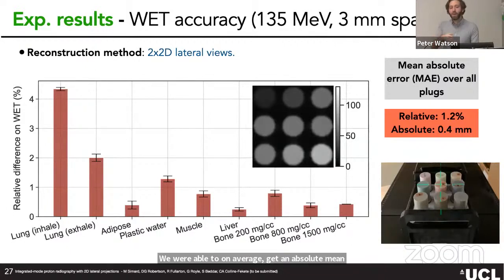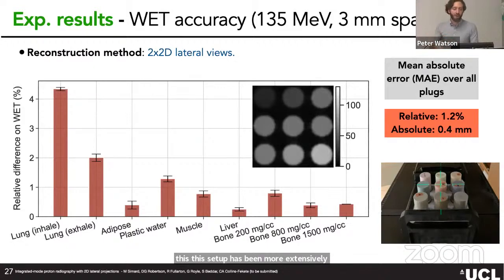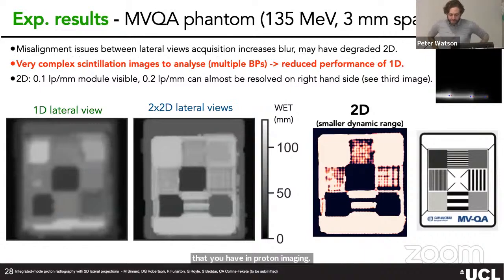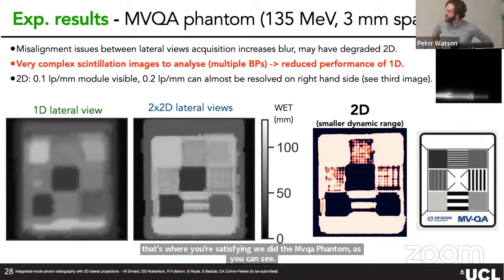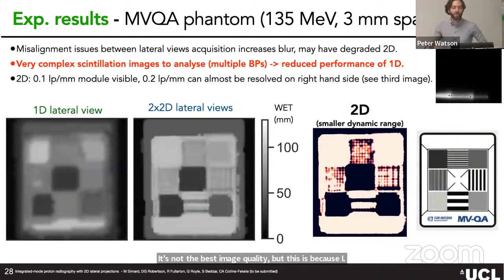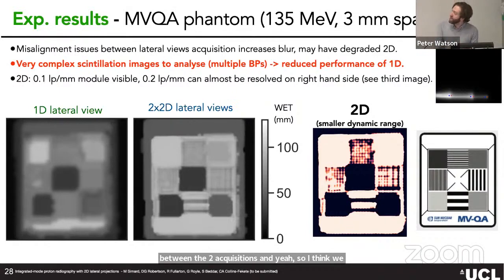Quantitative analysis showed about 27% improvement in contrast with our reconstruction method. For quantitative accuracy, we achieved an average mean absolute error of 0.4 mm — better than our range estimate — likely because this setup had more extensive calibration. This 0.4 mm is almost on par with the best systems in proton imaging, which is really satisfying.